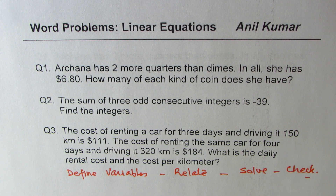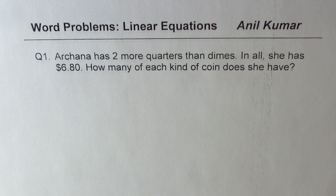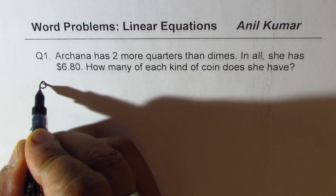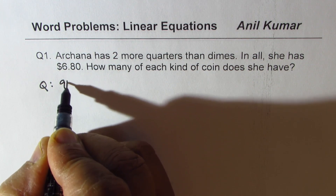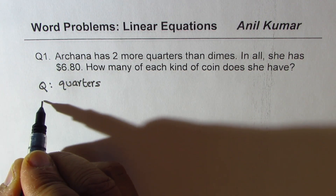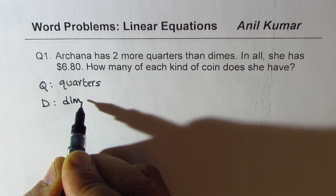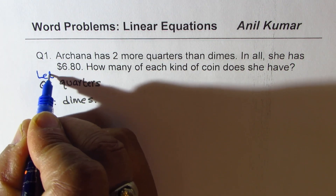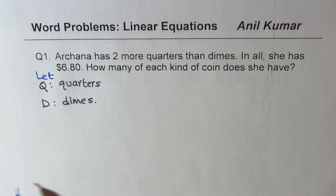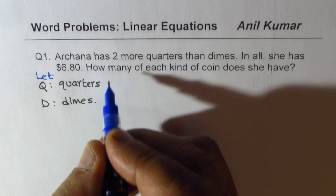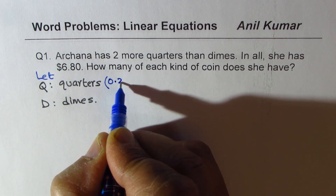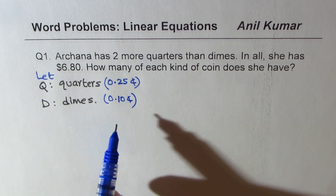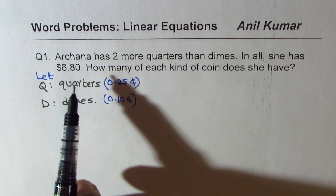Let's begin with the very first one: Arjuna has two more quarters than dimes. So we're talking about quarters and dimes. Let Q be quarters and D be dimes — that is how we have defined our variables. Quarters means 25 cents and dimes means 10 cents. That gives you the value.